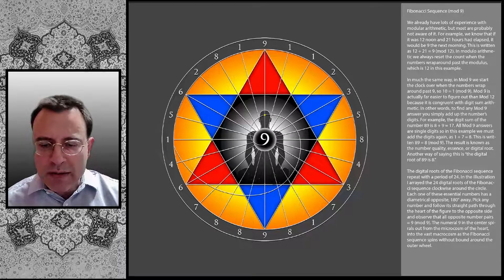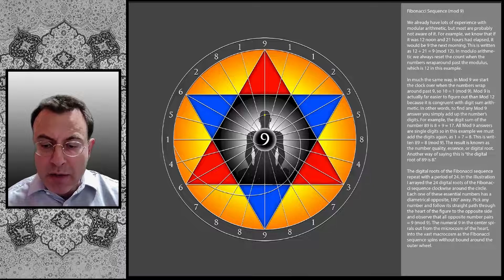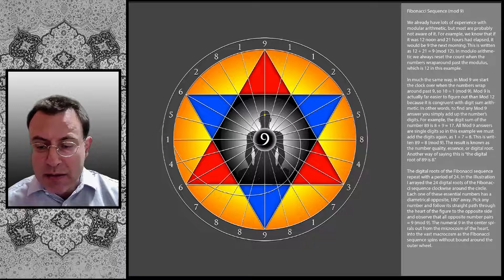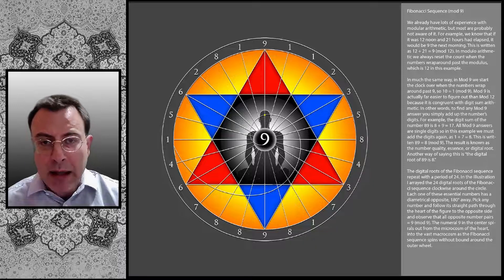The numeral 9 in the center spirals out from the microcosm of the heart into the vast macrocosm, as the Fibonacci sequence spins without bound around the outer wheel.